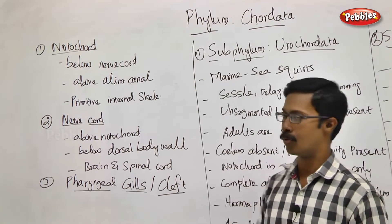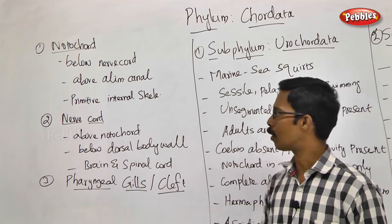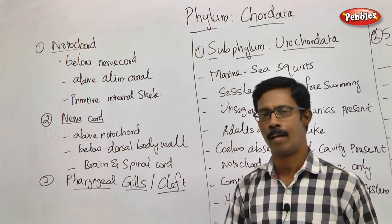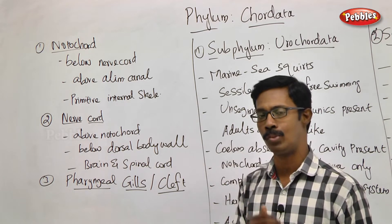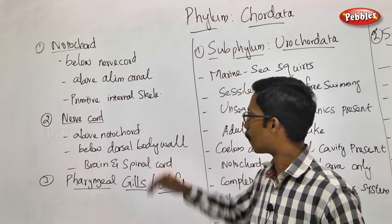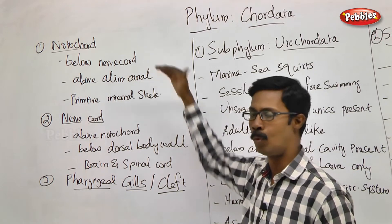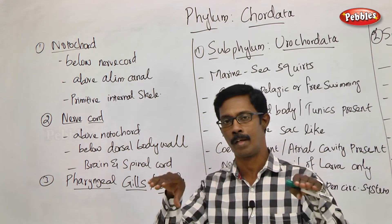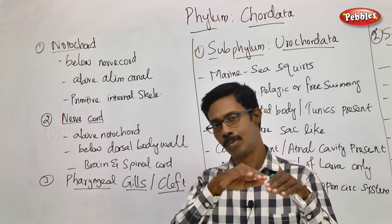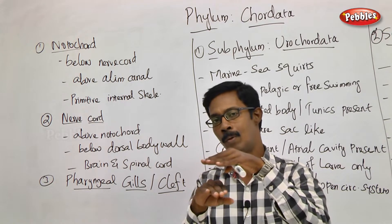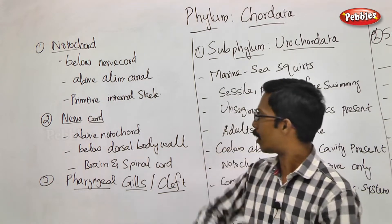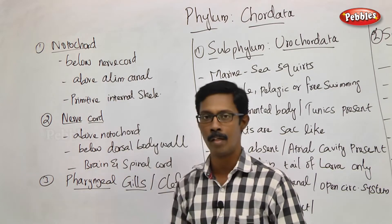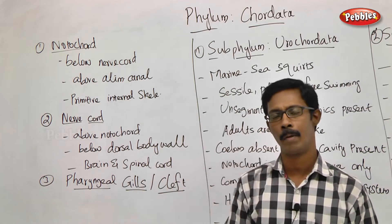What is the notochord? The notochord is actually a structure whose position is a specific location in the body. It is located below the nerve cord and above the alimentary canal. The digestive system is above in an animal. The nerve cord is below, and in between these two structures is where the notochord is found.